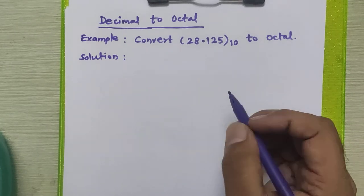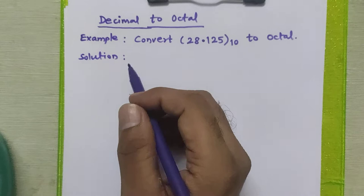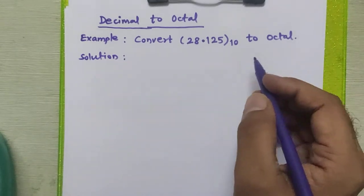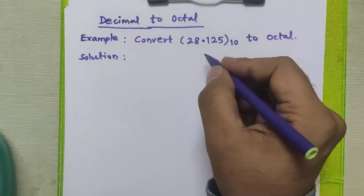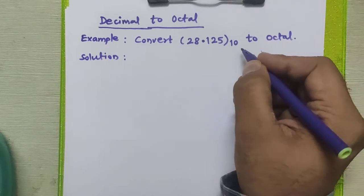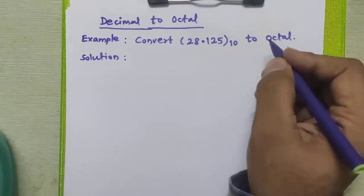Hello friends, in this video we are going to study how to convert a decimal number to octal number. Consider this number, 28.125 decimal, which is given to us to convert it to octal.